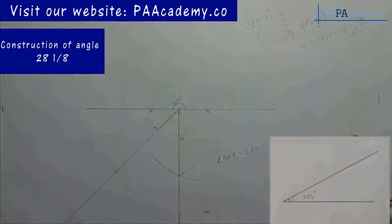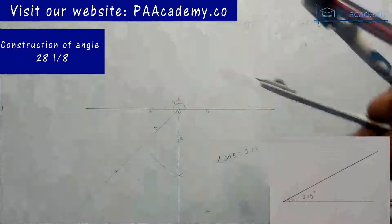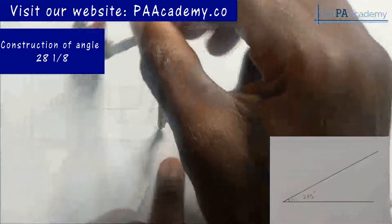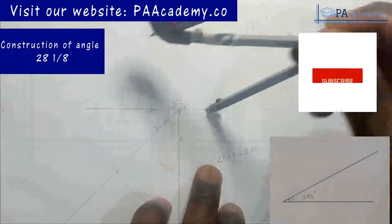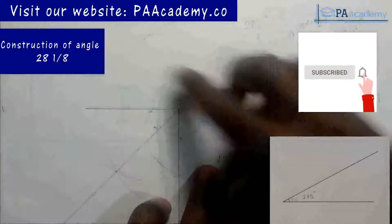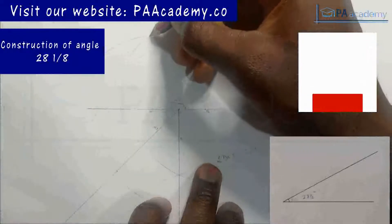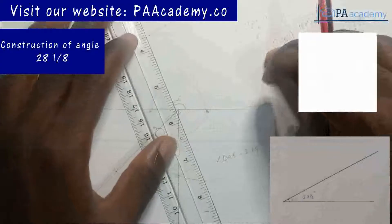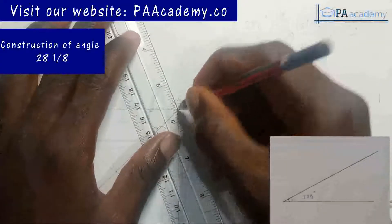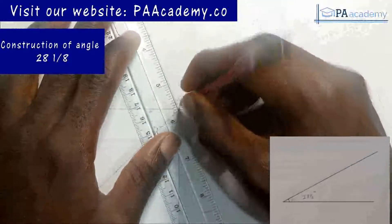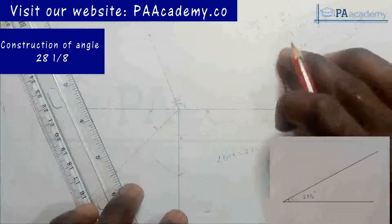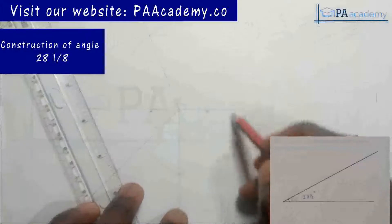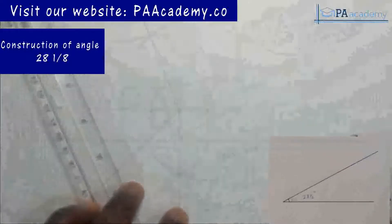Now let's bisect this angle — I'm going to divide it into halves. I bring in my compass, place it on point D, draw an arc. With the same length I come to point B and draw another arc. From the point of intersection I draw a straight line through to O. We've divided 225° into two equal parts, so this part here is 112.5 degrees.